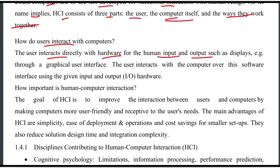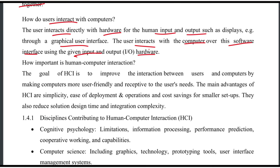The user interacts directly with hardware — input, output, and display — through a graphical user interface. The user interacts with the computer over the software interface using given input and output hardware such as the mouse, touch, click, and keyboard. Input devices include the keyboard, and output devices include the screen.